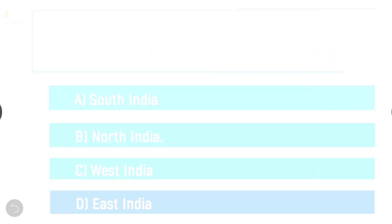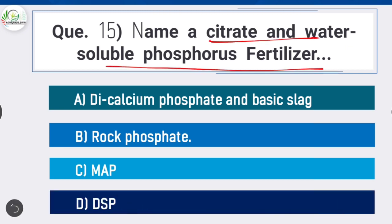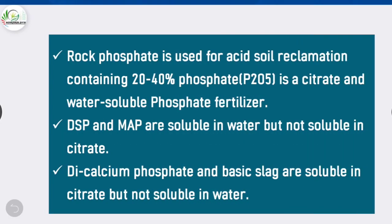Question 15: Name a citrate and water-soluble phosphorus fertilizer. Option B is correct: rock phosphate. Rock phosphate is used for acid soil reclamation, containing 20 to 40 percent phosphate (P2O5), and is a citrate and water-soluble phosphate fertilizer. DSP and MAP are soluble in water but not soluble in citrate. Dicalcium phosphate and basic slag are soluble in citrate but not soluble in water.